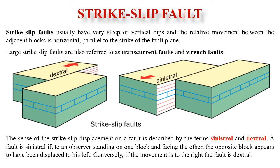The third type of fault based on movement is the strike-slip fault. Normal and reverse faults involve dip-slip movement — down-dip and up-dip respectively. In strike-slip faults, movement occurs parallel to the strike of the fault plane. Strike-slip faults usually have steep or vertical dips, and relative movement between adjacent blocks is horizontal and parallel to the fault strike. Large strike-slip faults are also known as transcurrent faults or wrench faults.